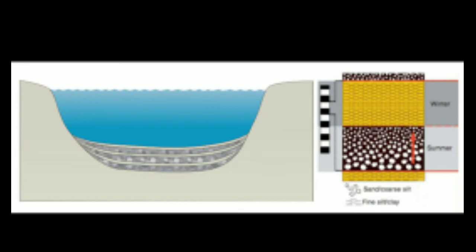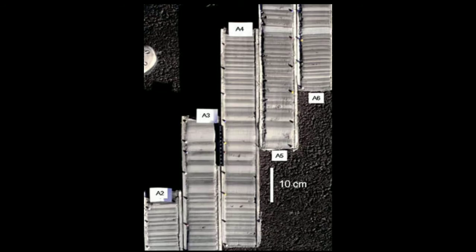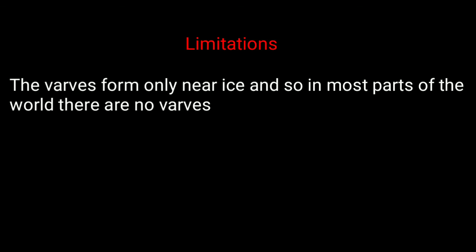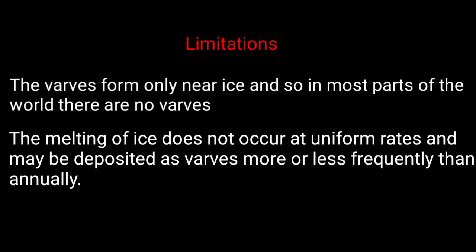Formation of varve depends on climatic variation. In summer when ice melts, coarse sediments deposit at the bottom, and in winter when the lake is frozen, the finer sediments deposit at the top. It is possible to measure the relative thickness of the varves and obtain a series to which one can compare and correlate new sections as they are discovered. There are some limitations of this method. The varves form only near ice, and so in most parts of the world there are no varves. The melting of ice does not occur at uniform rates and may be deposited as varves.